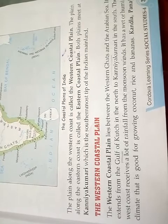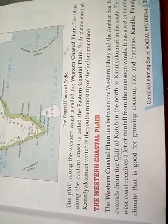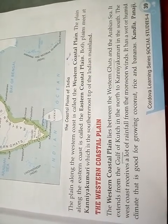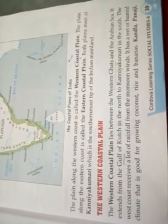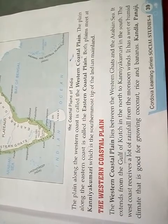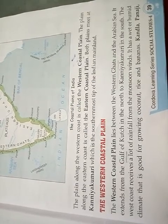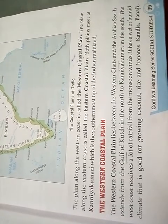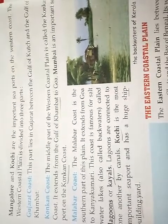Both plains meet at Kanyakumari, which is the southernmost tip of the Indian mainland. The western coastal plain lies between the Western Ghats and the Arabian Sea. It extends from the Gulf of Khambat in the north to Kanyakumari in the south. The west coast receives a lot of rainfall from the monsoon winds and has a wet or humid climate, good for growing coconut, rice, and bananas. Kandla, Panaji, Mangalore, and Kochi are the important seaports on the western coast.